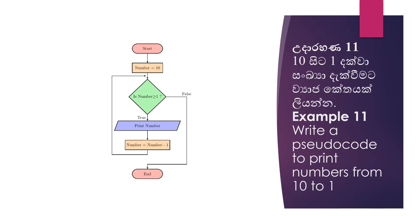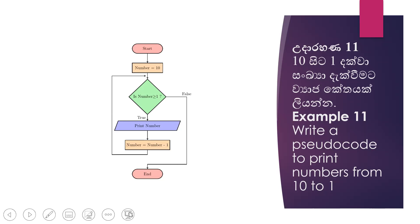Within the loop we print the number, and then we subtract the variable by one — so in our case it's number minus one.